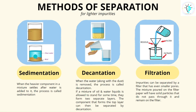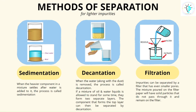Sedimentation happens when the heavier component settles down — for example, mud. If we have muddy water and let it settle for a few hours, the mud will settle and the clear water stays on top. This process is called sedimentation. When we then pour the clean water into another beaker, that process is called decantation. However, in this process the lighter dust particles on the top layer of the water surface will also be decanted into the second beaker.